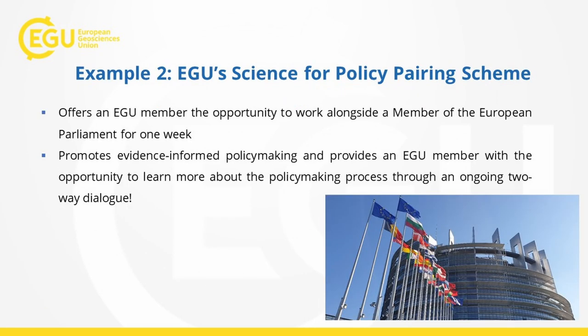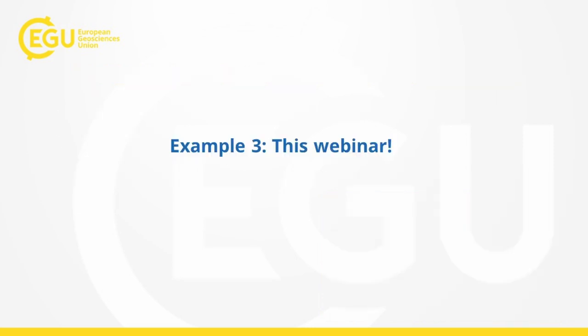The second example is the science policy pairing scheme. This gives one EGU member the opportunity to engage over a longer period of time and really get to know who is working for a specific MEP. Because they're in the parliament for a whole week, they'll mainly be looked after by one or two assistants — and those assistants are the ones who do all the work. If you form that relationship and trust going forward, there may be room for future collaboration. The third example is this webinar itself, since there are people in the room today who are working on the science-policy interface as well.